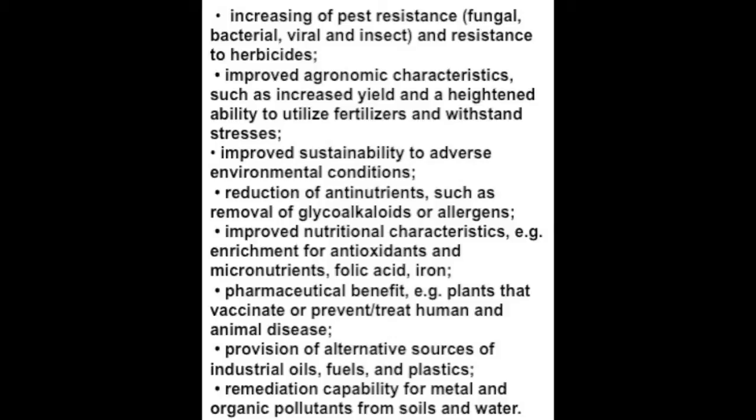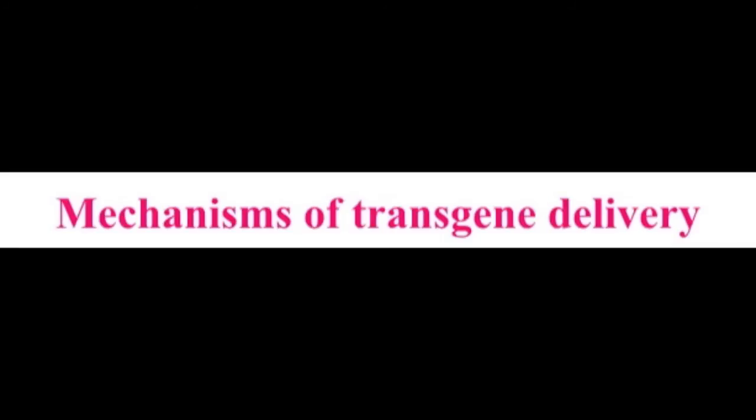Here are some applications of GM plants: number one, increased pest resistance to fungal, bacterial, viral, and insect pests; number two, improved agronomic characteristics such as increased yield and heightened ability to utilize fertilizers and withstand stresses; number three, better post-harvest processing characteristics like slow-ripening fruits and vegetables and higher solid tomatoes; number four, reduction of anti-nutrients such as removal of glycoalkaloids or allergens; improved nutritional characteristics and pharmaceutical benefits; and provision of alternative sources of industrial oils, fuels, and plastics; and lastly, remediation capacity for metal and organic pollutants from soils and water.